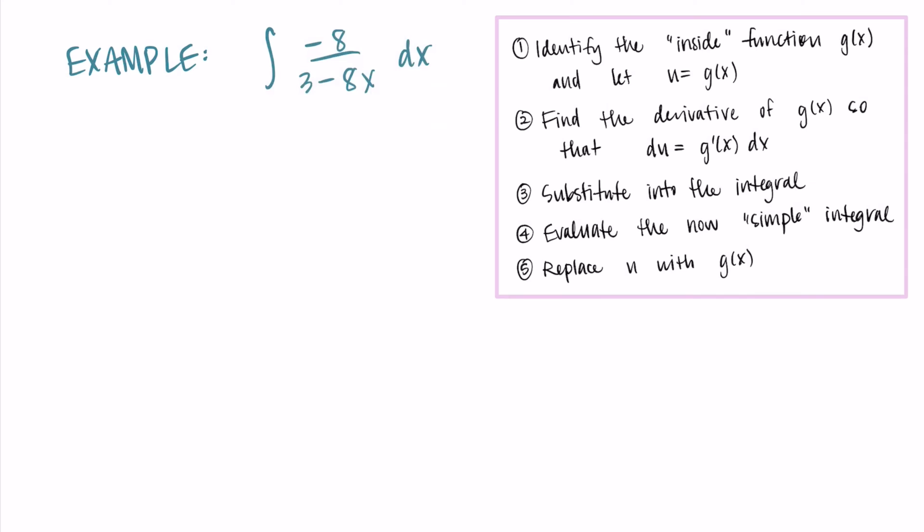So I want to choose the thing with the x's in it as my u, or the thing with the most x's, I guess. So I'm going to choose u is equal to 3-8x. And then when I do the derivative of u, I'm getting -8 dx.